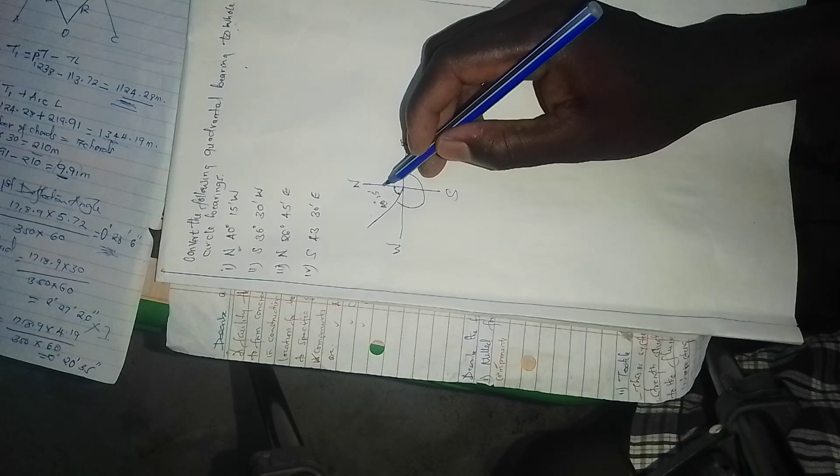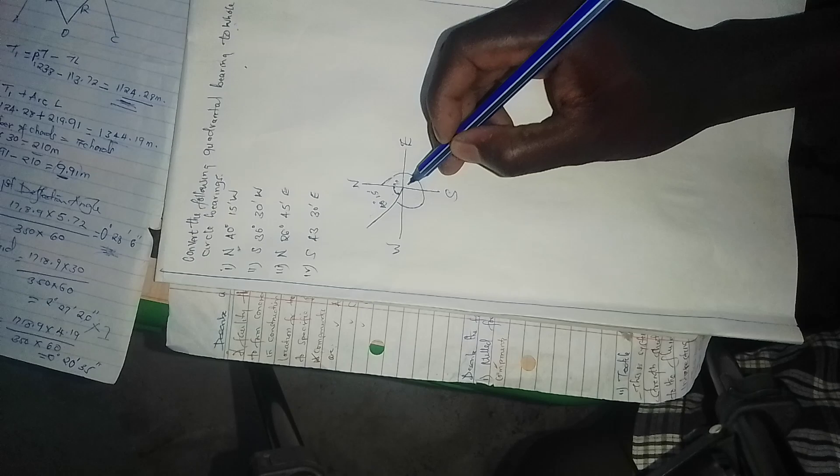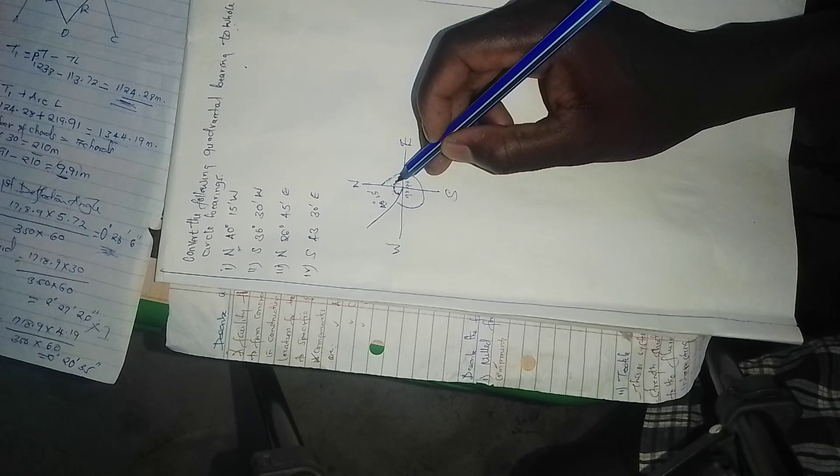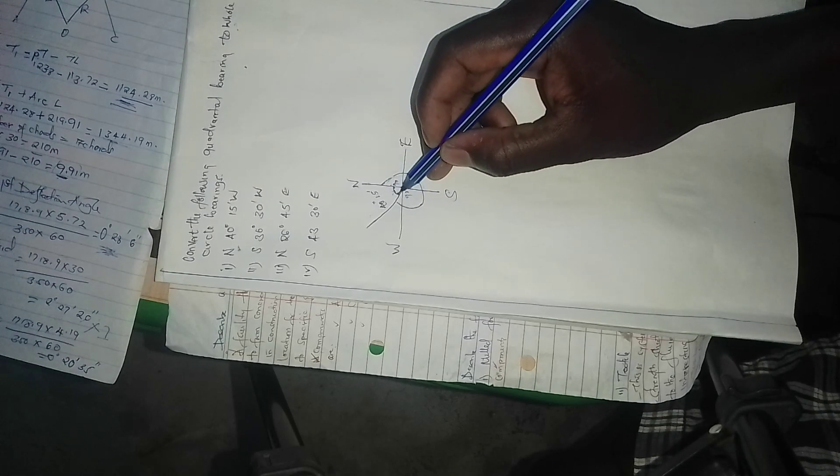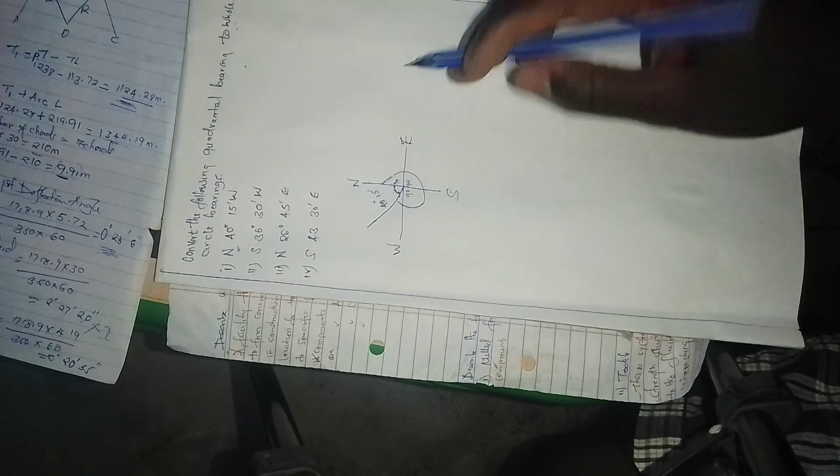This whole line is 90, 90, 90, 90 degrees. So here 90 plus 90 plus 90 is 270, and here it is 90 but now we subtract 40 degrees 15 minutes.